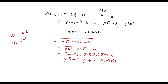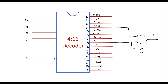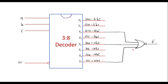So the rule is: if there is a minterm, connect an OR gate; and if there is a maxterm, connect a NOR gate. This is the implementation of the given functions using a decoder. Thank you for watching.